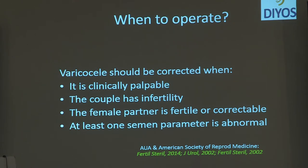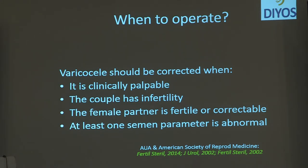We will start with when to operate, which means what are the indications — this is relatively well defined. What the AUA and the American Society of Reproductive Medicine say is that the varicocele must be clinically palpable, the couple has infertility. There is a difference in duration of infertility between the American and European guidelines: the American Reproductive Society for Medicine says one year is enough, whereas the European guidelines wait for two years. The female partner has to be correctable or normal, and at least one semen parameter is abnormal. Certain societies now also include semen abnormalities including advanced sperm function tests, which is an inclusion coming into more recent guidelines.